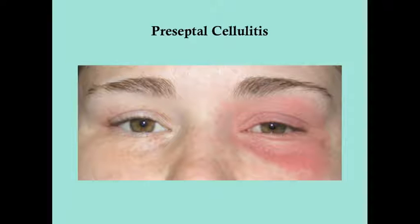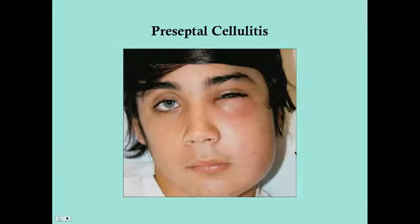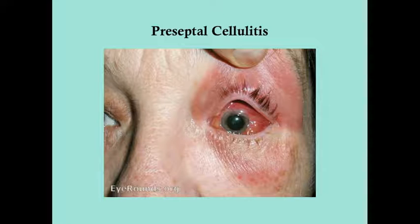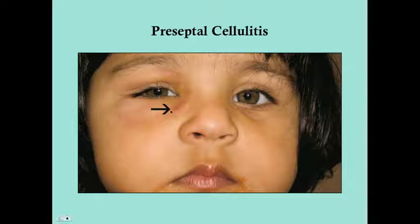Here's a typical case of preseptal cellulitis — relatively mild. This patient has no problem keeping the eye open, but there is redness around the eyelids and surrounding tissue. A more severe case shows the eye more swollen shut. When the eye is opened, there can be significant conjunctival injection. One picture appears to show dacryocystitis, which makes sense because preseptal cellulitis can follow infection of the nasolacrimal duct spreading into surrounding tissue.